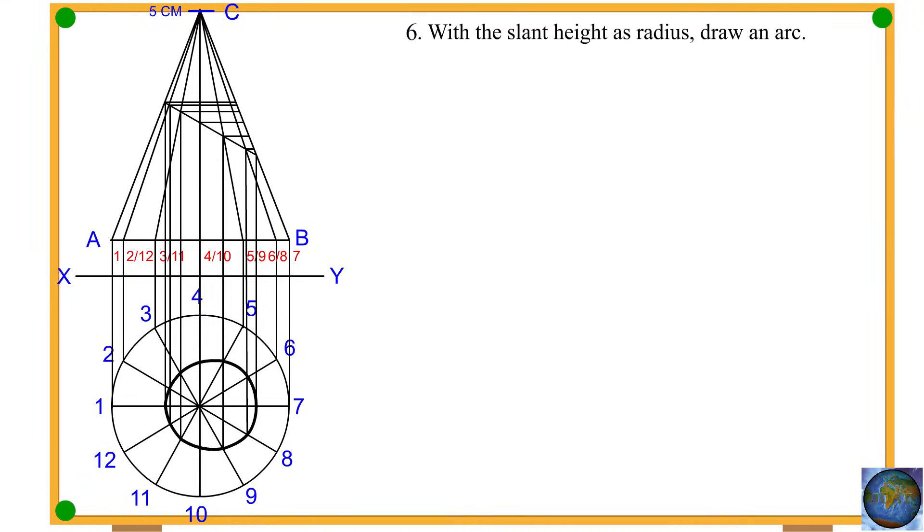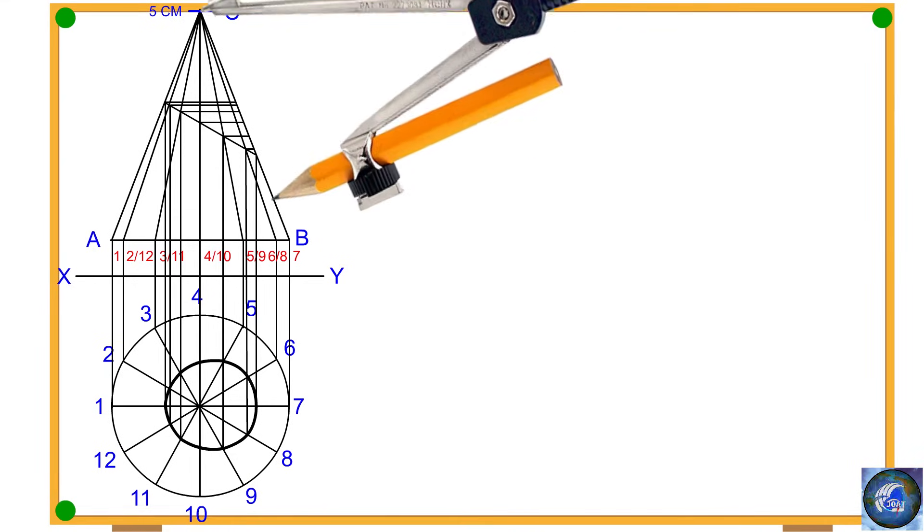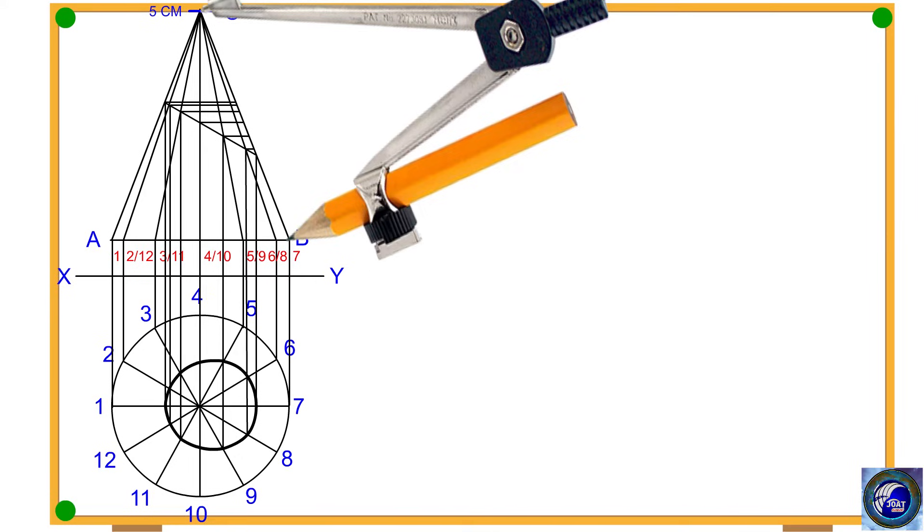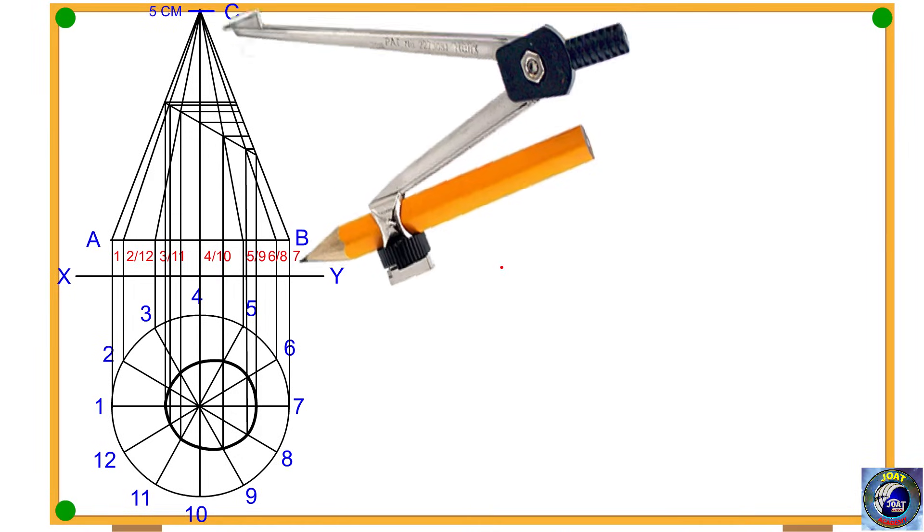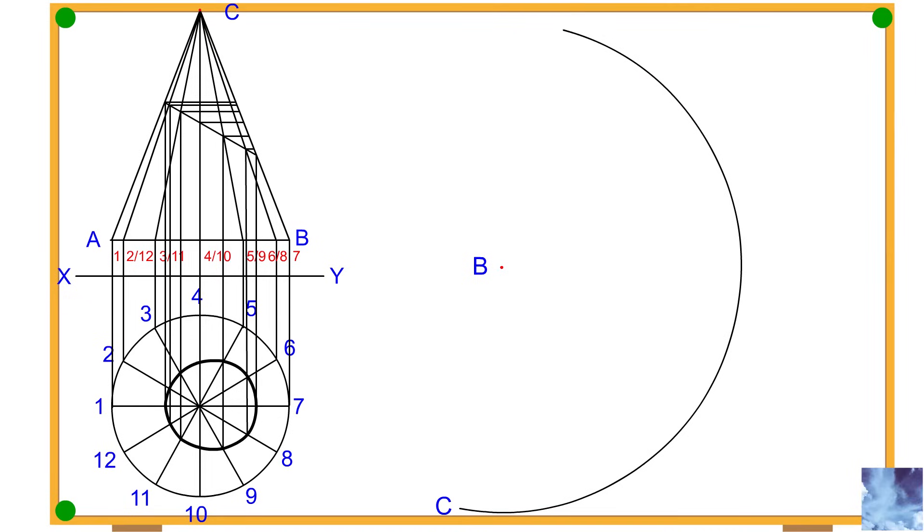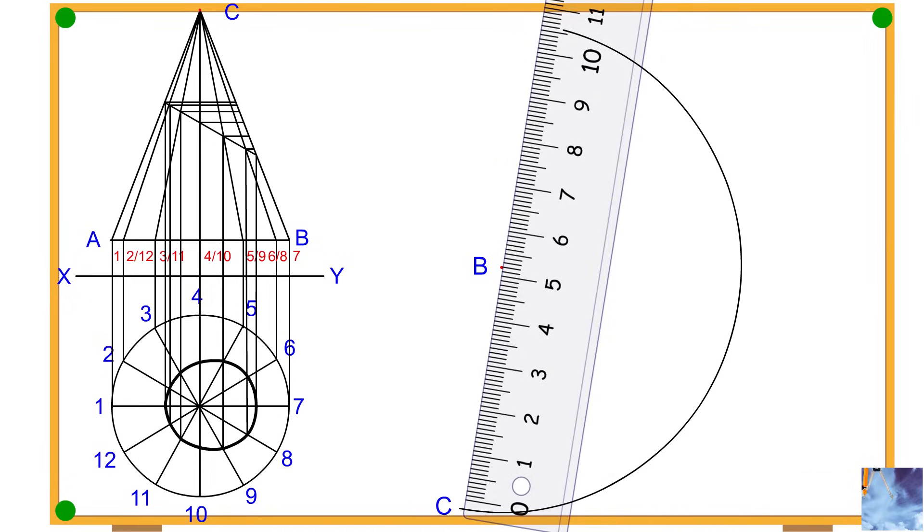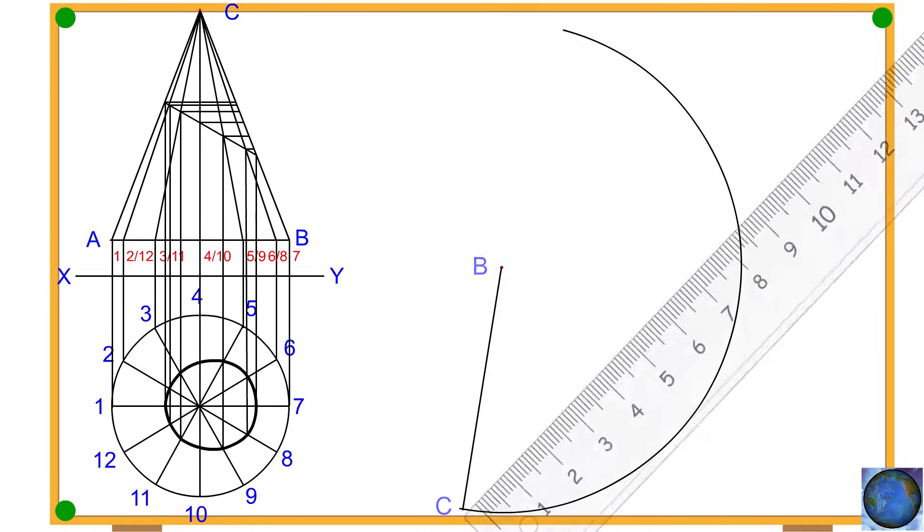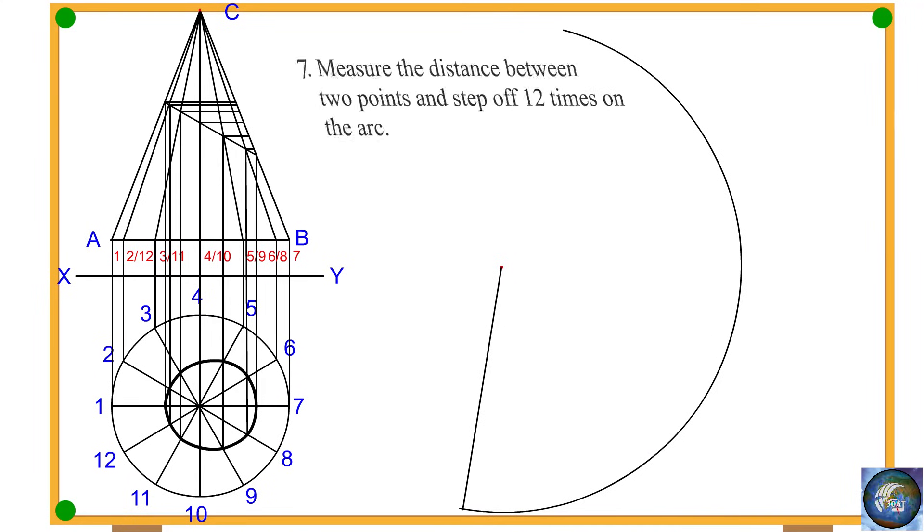Procedure 6: With the slant height as radius, draw an arc. Procedure 7: Measure the distance between two points and step off twelve times on the arc.